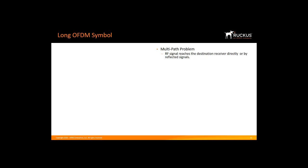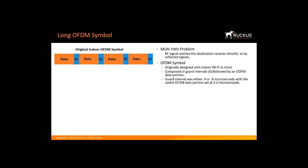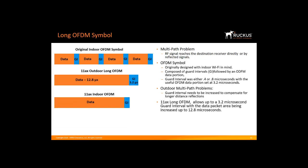When wireless devices transmit a signal, RF reaches the receiver directly and by reflections off walls, ceilings, and obstacles — referred to as multipath. The OFDM symbol was originally designed with indoor Wi-Fi in mind, with guard intervals of 0.4 or 0.8 microseconds and a useful data portion of 3.2 microseconds. For outdoor use, longer reflections require larger guard intervals. 11ax Long OFDM allows up to a 3.2 microsecond guard interval, with the data portion increased four times to 12.8 microseconds, providing greater multipath tolerance and better outdoor throughput.